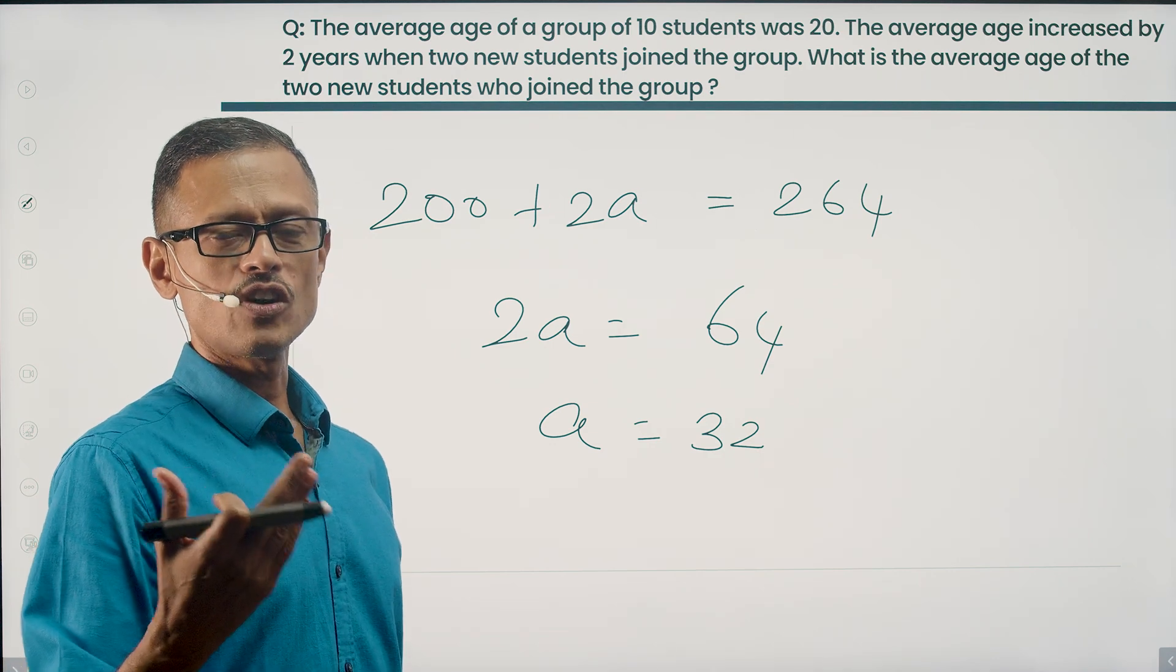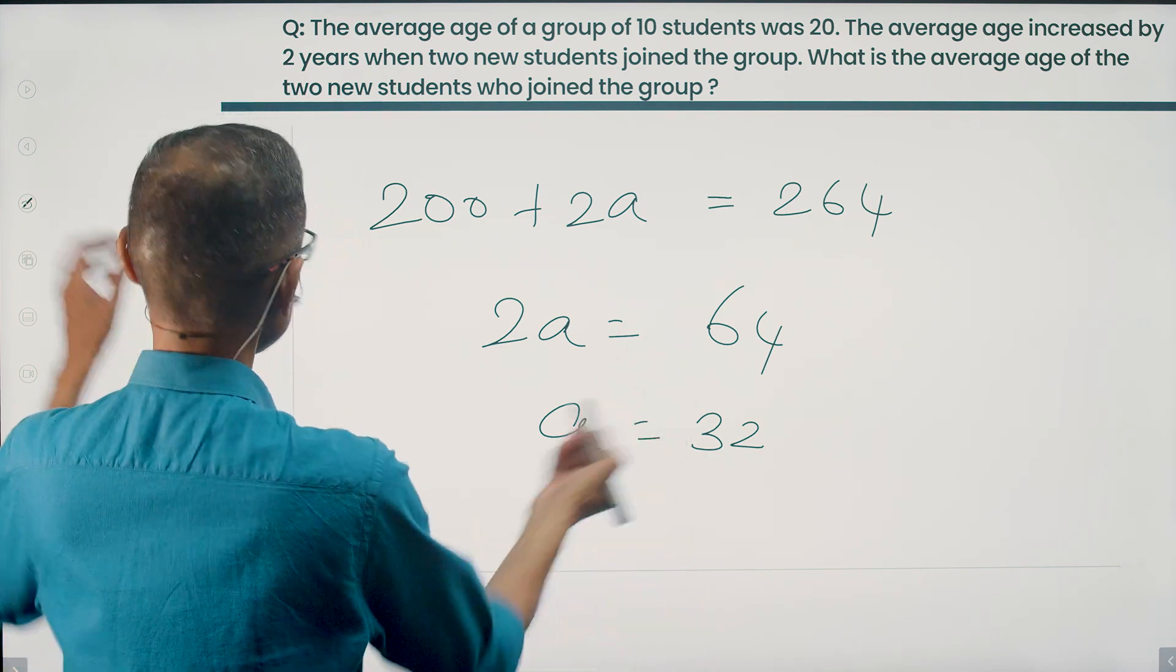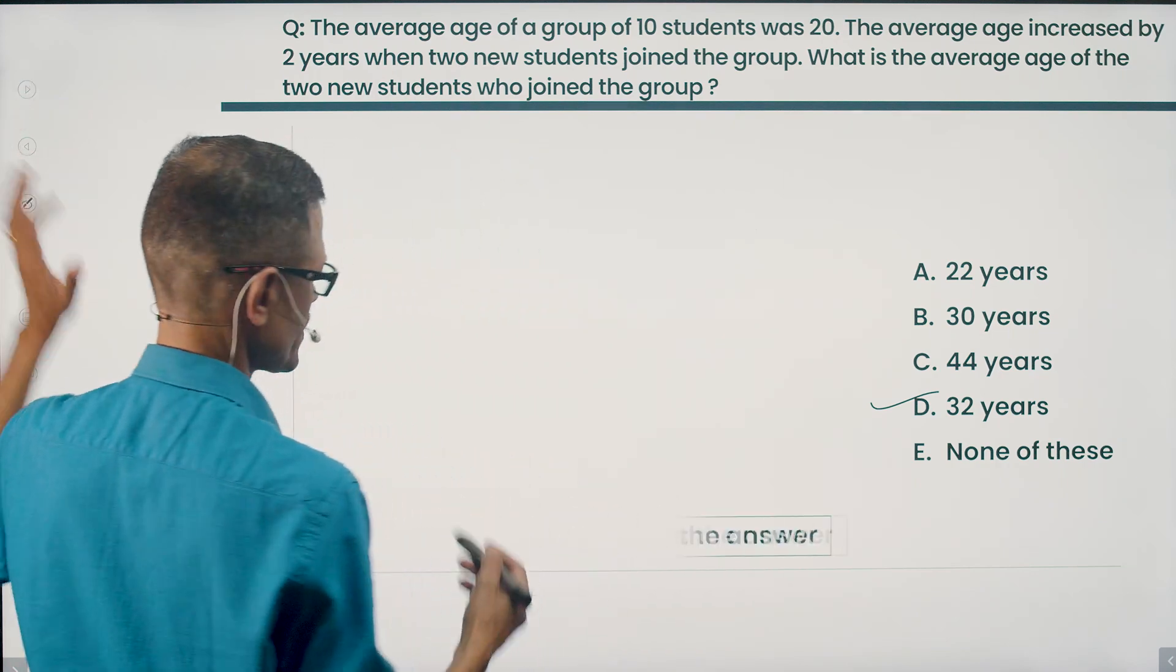What is a? A is the average age of the new students who join the group. Which is what we needed to find out. So 32 years, choice D is the correct answer to this question.